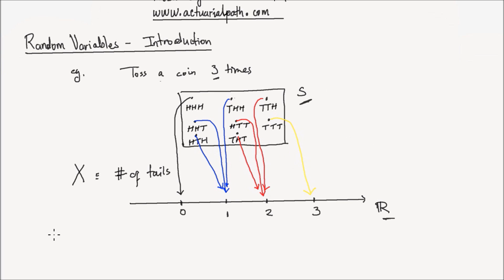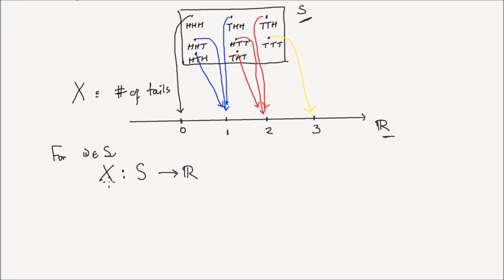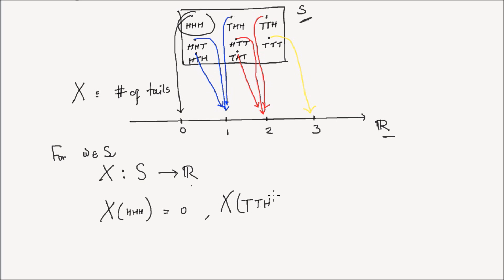A mapping from the sample space to the real number line for any omega inside the sample space S. So omega could be heads, heads, and heads, or heads, heads, and tails — any point in your sample space can be mapped from the sample space to the real number line. Therefore, the definition of a random variable is: a mapping from the sample space to the real number line, or in other words, a random variable assigns a numerical value to each outcome in your sample space. X is a function from the sample space to the real number line. For example, if you take heads, heads, heads into the function X, your outcome is going to be zero — the number of tails in the sequence of three heads. Or maybe another point: tails, tails, and heads put into the function X gives you two.